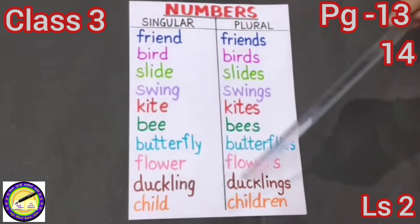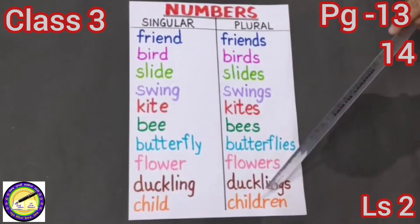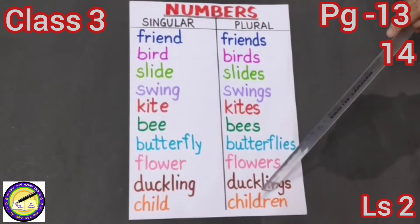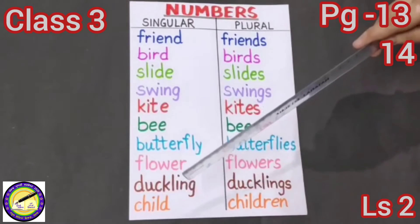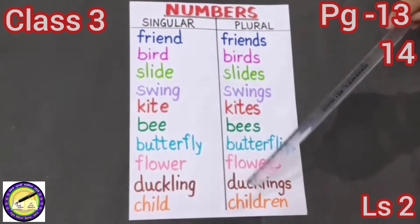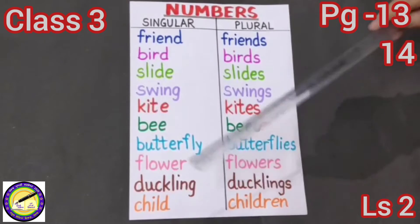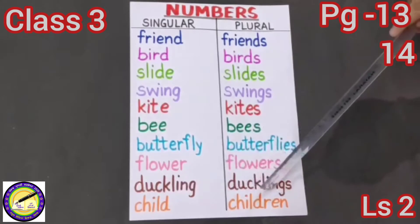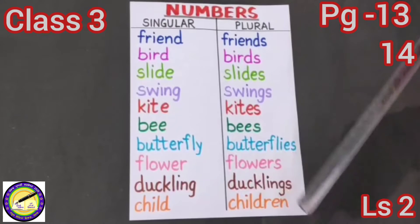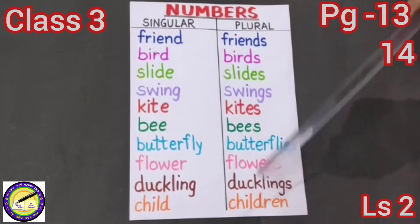Child — children. Look at this word. It is not 'childs' — it is 'children'. The plural form of child is children — childs nahi hunda.